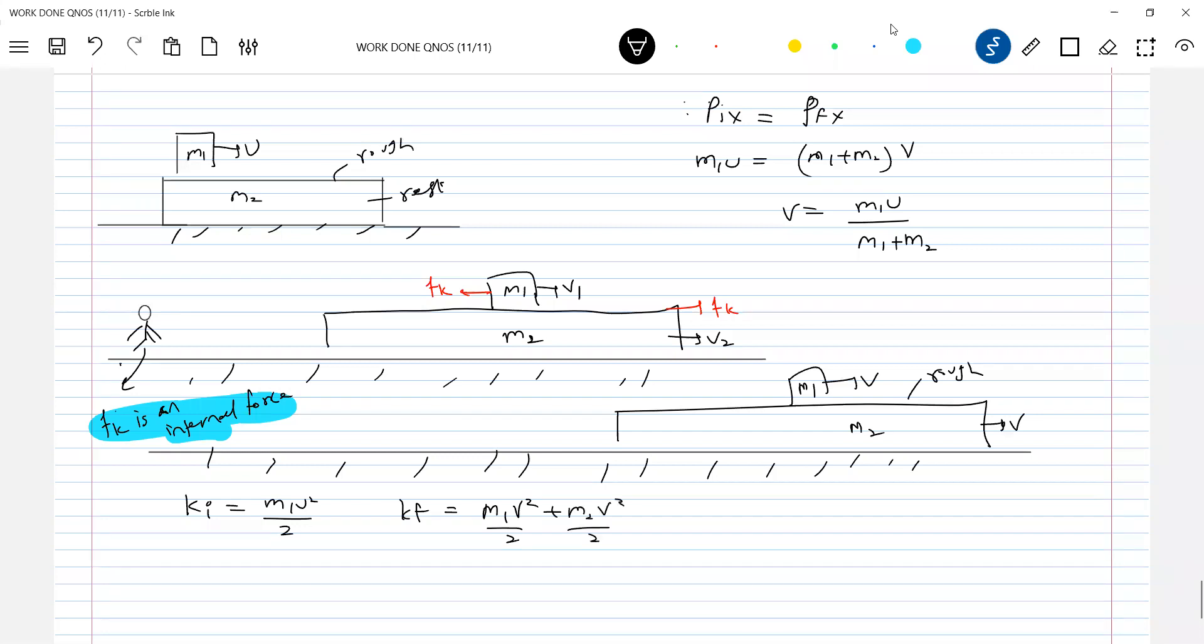How do you know, is KF equal to KI? That will cross check. No. So M1 plus M2 V square by 2. M1 U square by 2. What is V? M1 U by M1 plus M2 whole square.